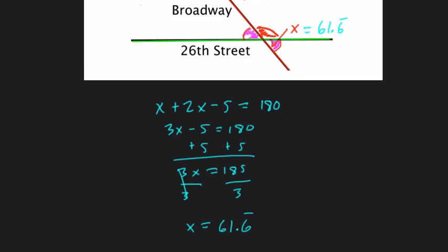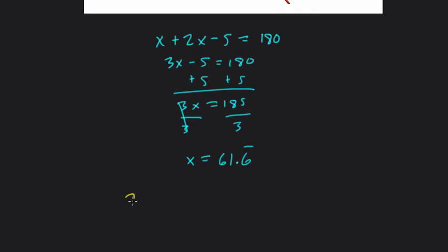Here the other angle, we have 2x minus 5. So let's evaluate that when x is 61.6. 2x minus 5. So 2 times 61 and 2 thirds, we're going to make mixed numbers for operations, minus 5. 2 times 61 is 122. 2 times 2 thirds is 4 thirds.